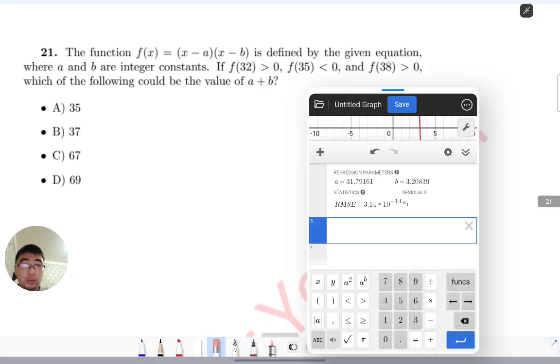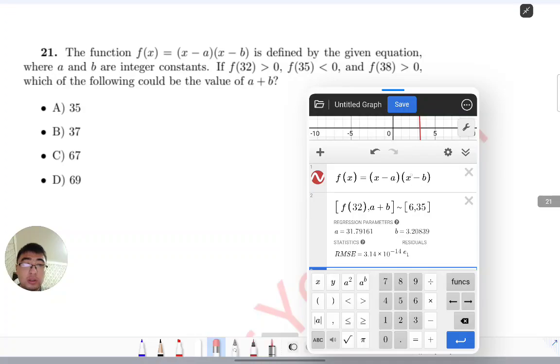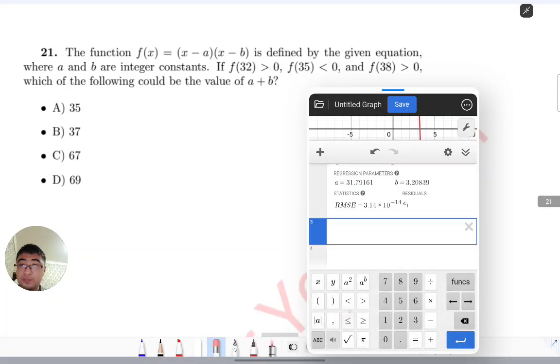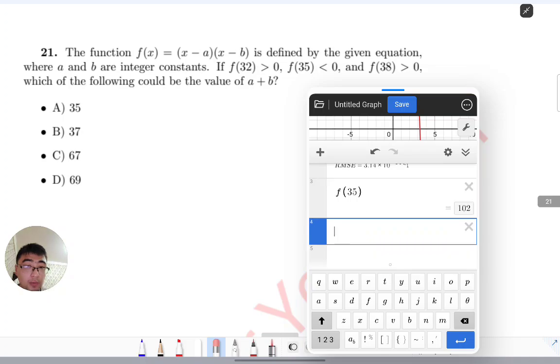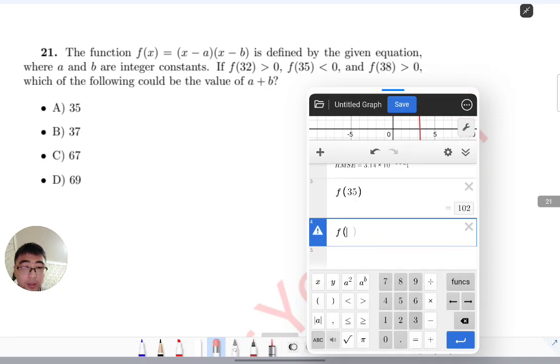My function is fully created now. You can see that I must draw it. So then f(35) should be less than zero, and f(38) should be positive.